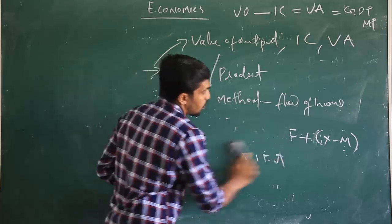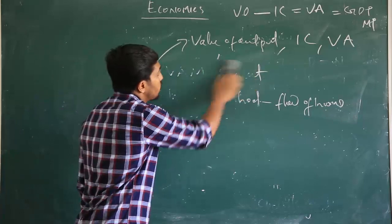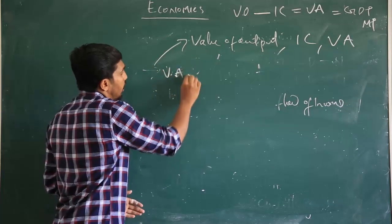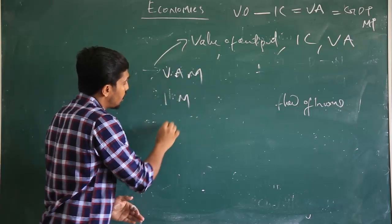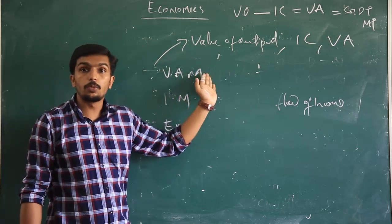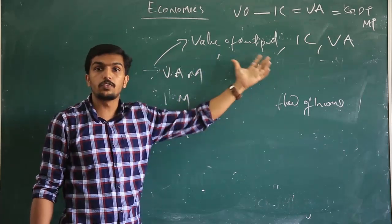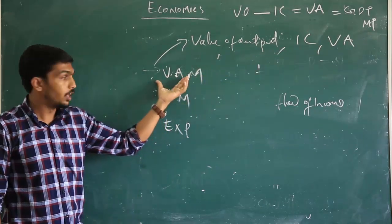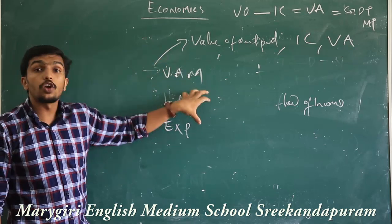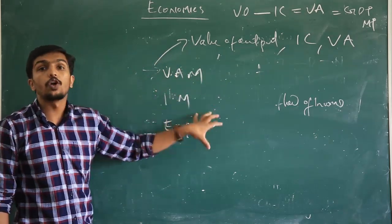To conclude: there are three methods of national income estimation. The Value Added Method analyzes national income on the basis of flow of goods and values. The Income Method analyzes national income on the basis of flow of income. The Expenditure Method analyzes national income on the basis of flow of expenditures.